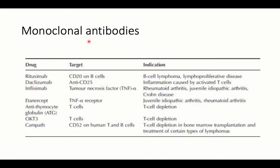Monoclonal antibodies are used in different inflammatory conditions. Rituximab is a monoclonal antibody targeting B cells carrying CD20, so it is an anti-CD20 antibody. It can be used in B-cell lymphoma, lymphoproliferative disease, resistant immune thrombocytopenic purpura, and other autoimmune diseases where targeting B cells reduces immunoglobulin production.